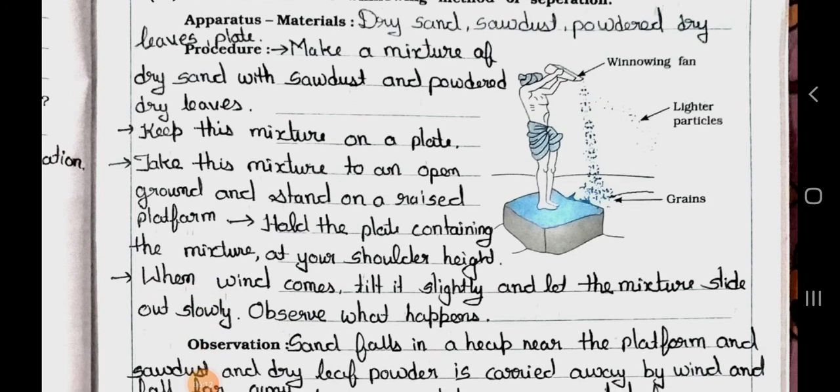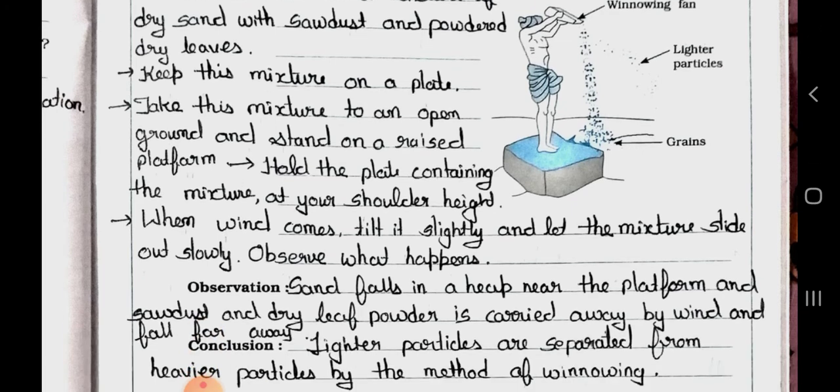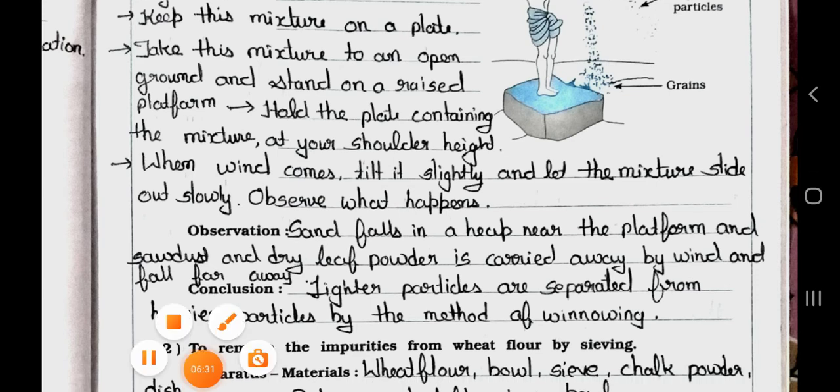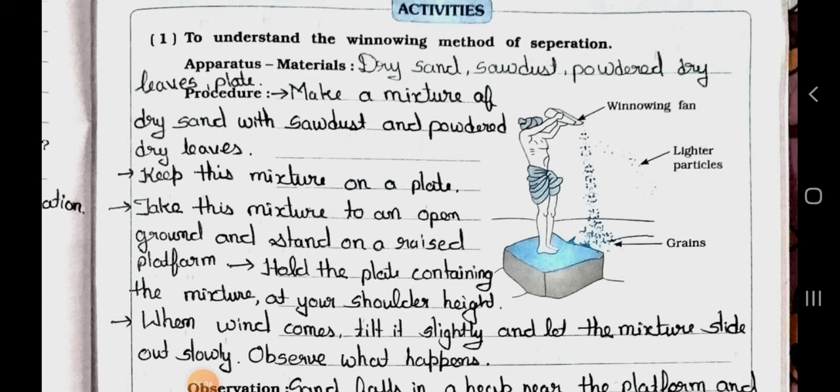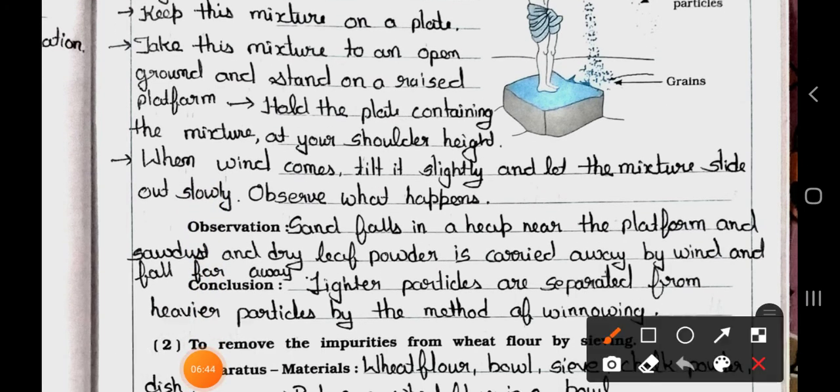Procedure: Make a mixture of dry sand with sawdust powder and dry leaves. Here the winnowing fan, lighter particles and grains are there. Keep these mixtures on a plate. Take this mixture to an open ground and stand on a raised platform. Hold the plate containing the mixture at your shoulder height. When wind comes, tilt it slightly and let the mixture slide out slightly. Observe what happens.